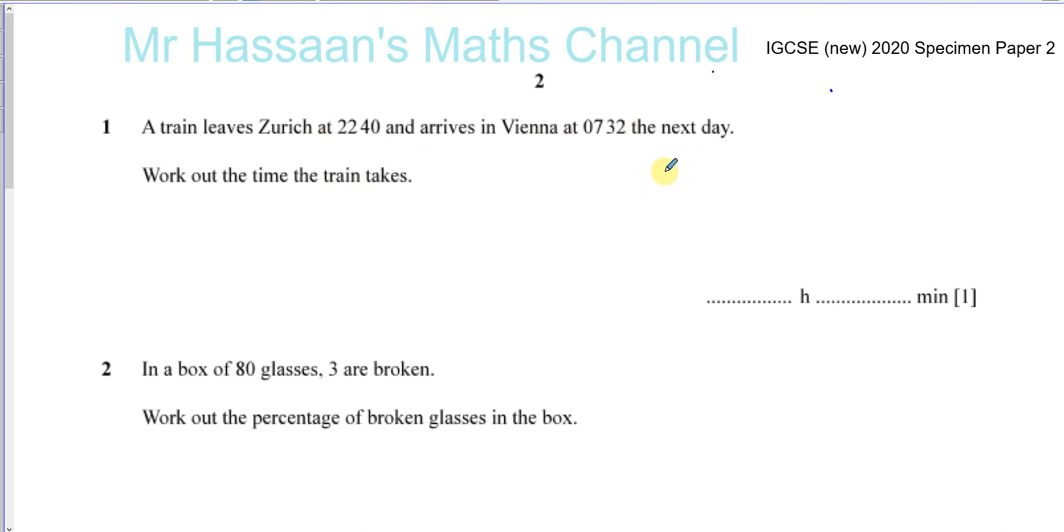Probably the easiest way to do it is to work out the time between 22:40 and midnight, which is 24:00 hours. If you're not sure how to do that in your head, no problem. I'll show you a little method that you can use for any question like this. So you have 24:00 hours minus 22:40. That will tell you the number of hours between 22:40 and midnight.